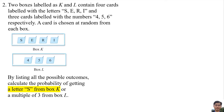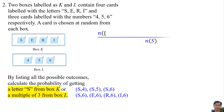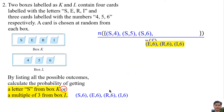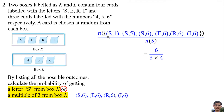If a letter S is chosen from box K, the outcomes are S4, S5, or S6. If a multiple of 3 is chosen from box L, the outcomes are S6, E6, R6, or I6. Combining all of them, with repeating elements counted only once, gives 6 elements. The total possible outcomes are 3 times 4 = 12, so the probability is 6 over 12, which equals 1 over 2.